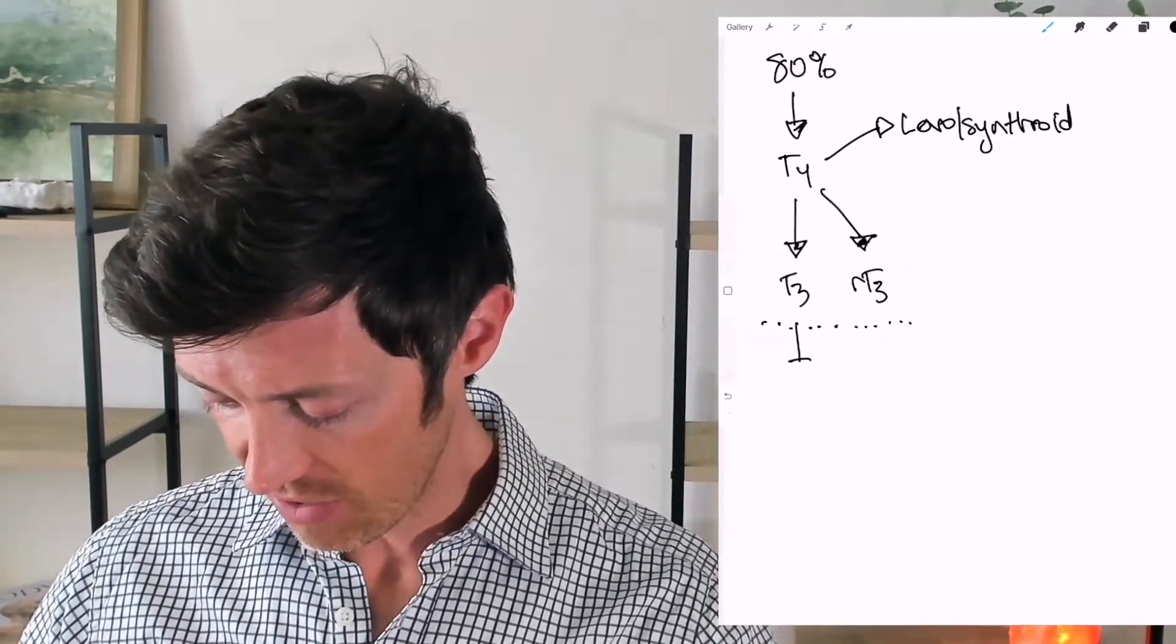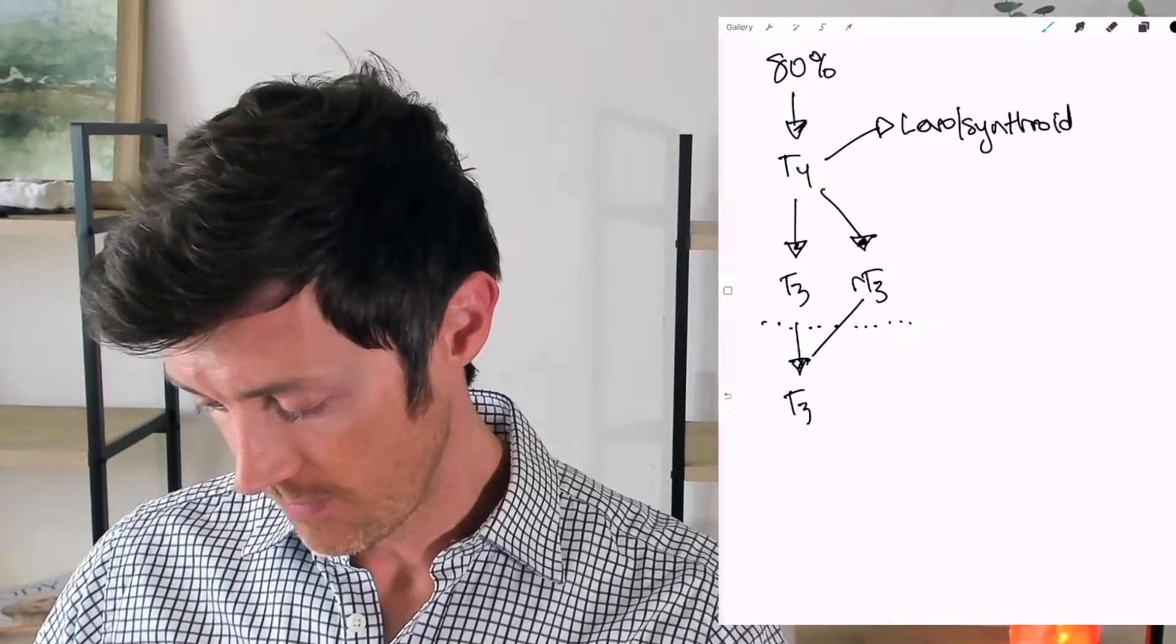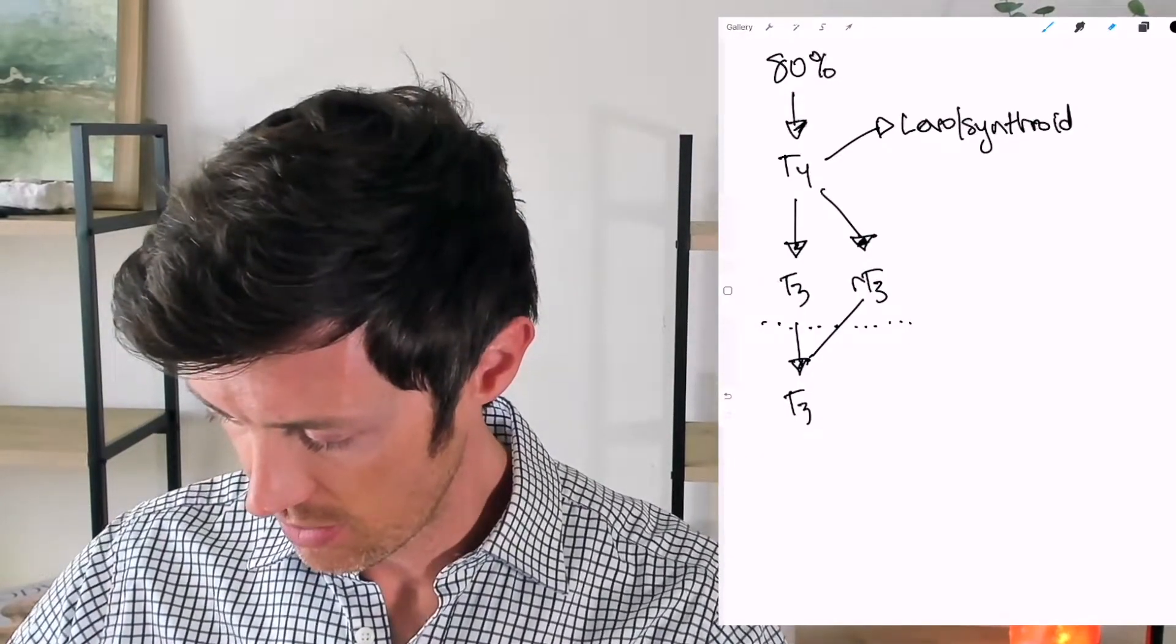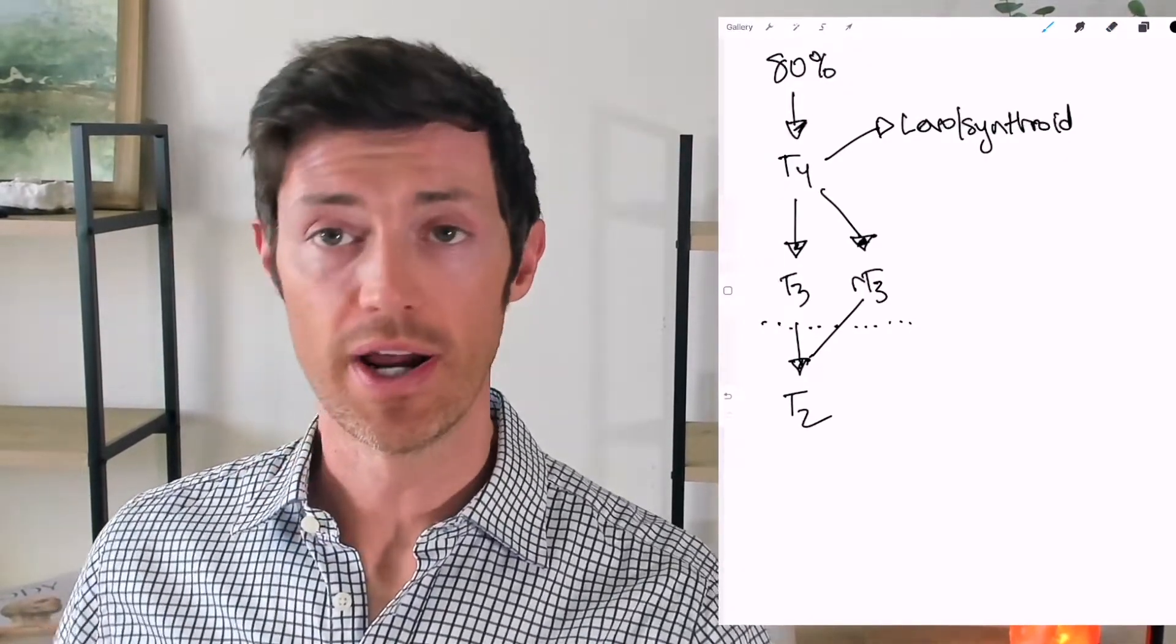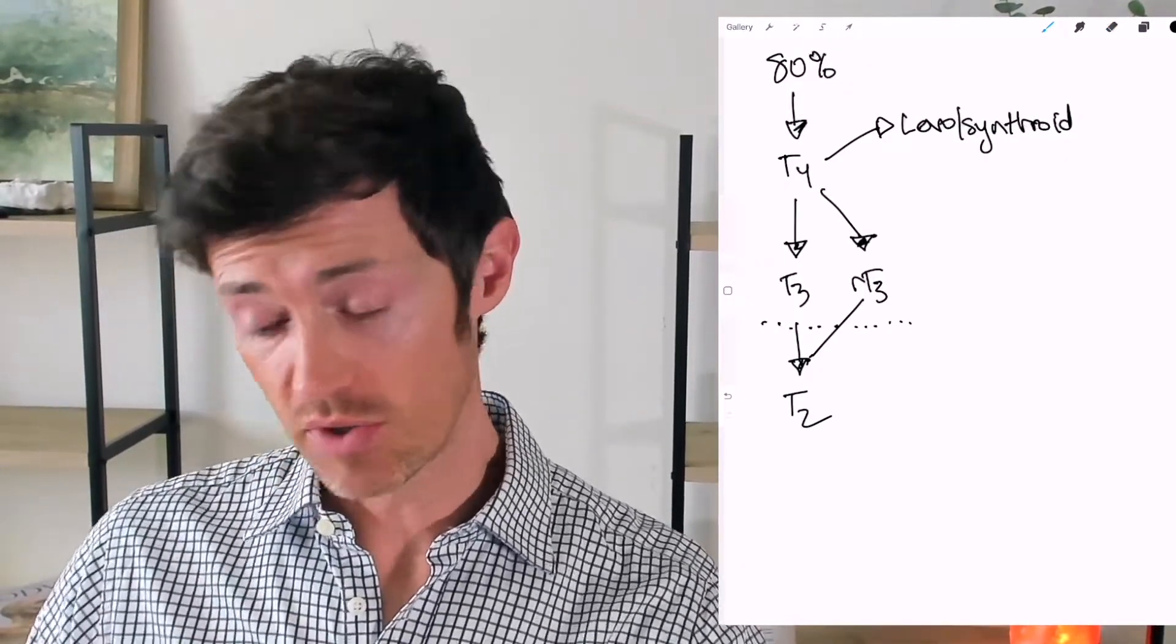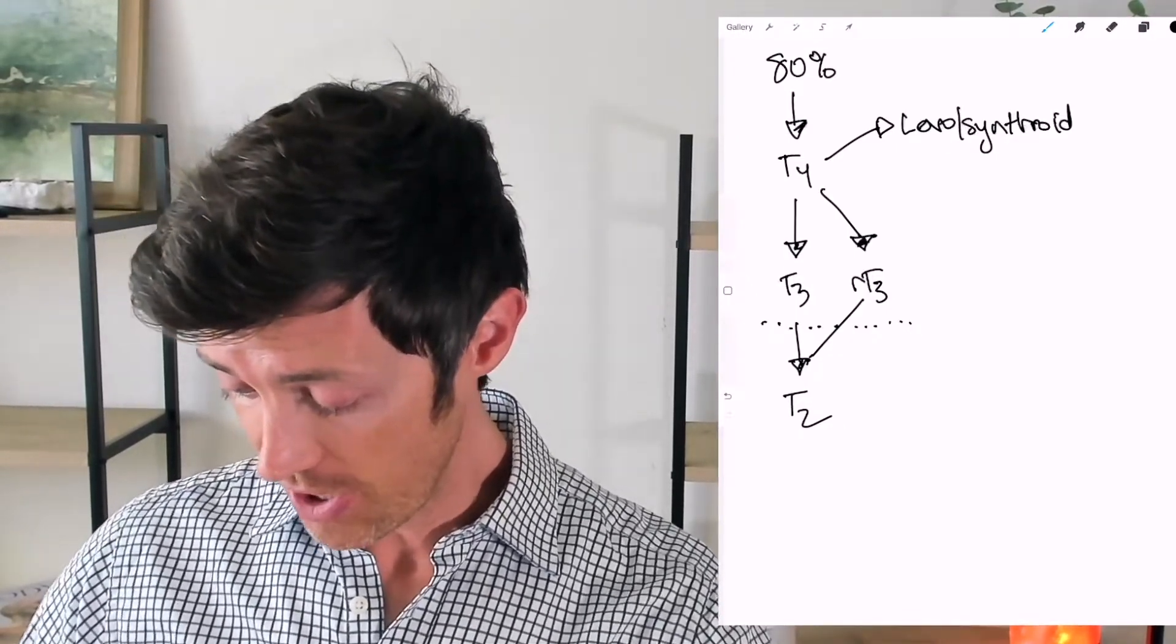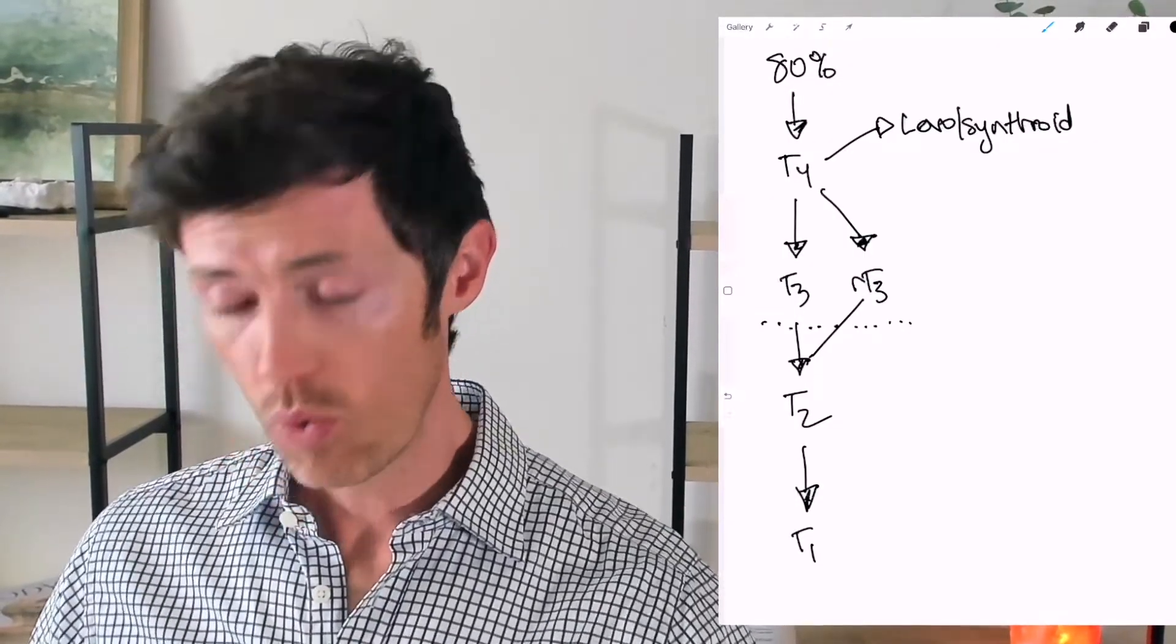So let me explain. So T3 then gets converted to T2 as well as reverse T3. So you have both T3 and reverse T3 being converted. That should be T2, right? So that's where T2 comes into play. So T2 is down farther on that conversion process.